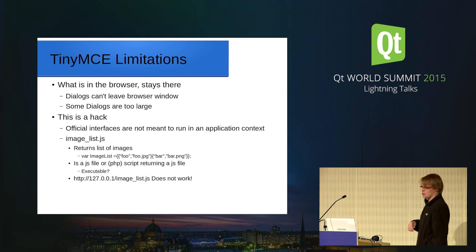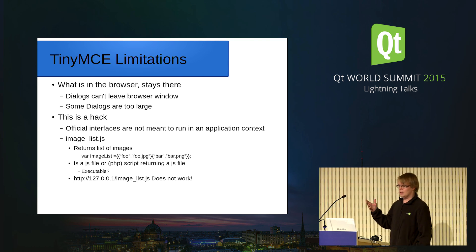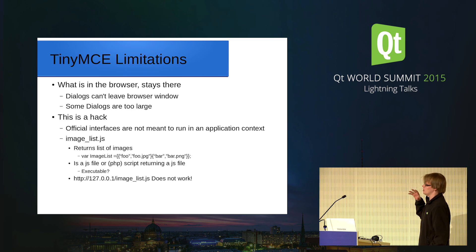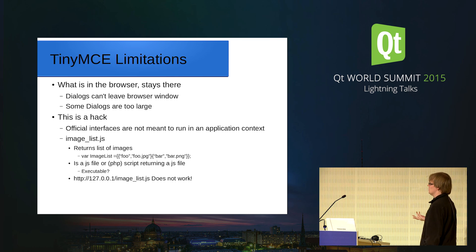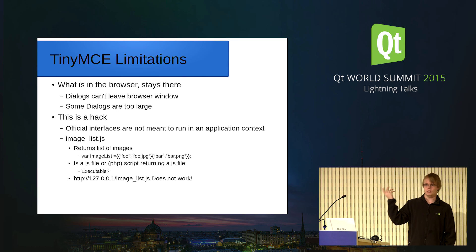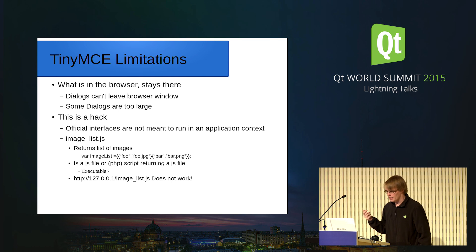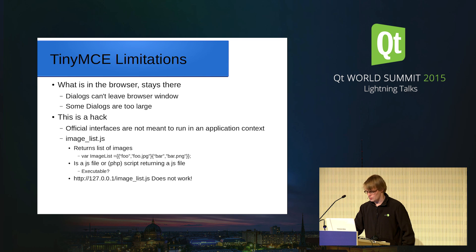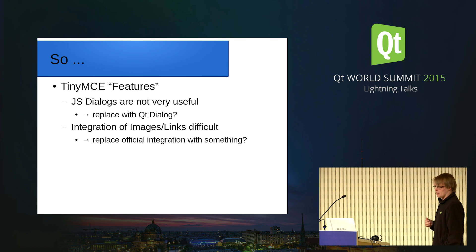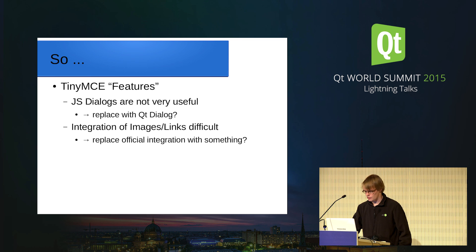TinyMCE comes with a few limitations for this approach. For example, if I open a dialog inside the WebView window, the JavaScript dialog stays in that window. This is a little bit of a hack. The official method to tell the editor which images to use is a JavaScript file on the file system, and I don't want to rewrite that all the time. It's basically locked into the file system, so I have to replace the JavaScript dialog to spawn a Qt dialog, and replace the official image and link handling with my own stuff.